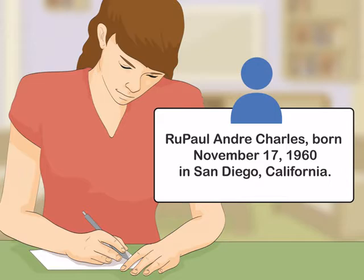To outline a biography, start by discussing early life and childhood. Then go into adulthood and current life, or later life and death if the person is no longer alive.